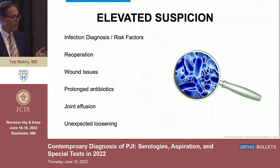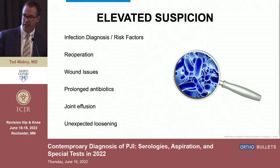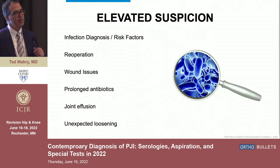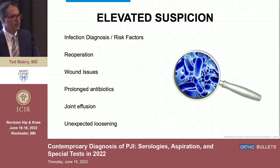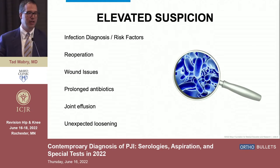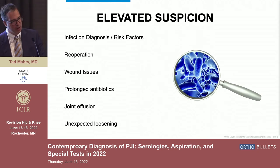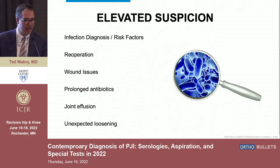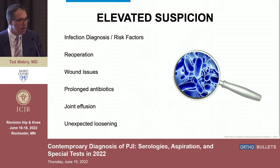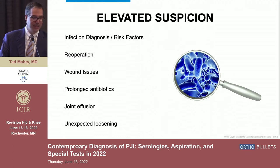Other factors that should raise your suspicion and make you look harder for infection: a prior diagnosis of infection, risk factors for infection, early reoperation, patients that have had wound issues, or a history of being given weeks of antibiotics post-discharge. Also look specifically for joint effusion or unexpected loosening — an implant that looked great on initial x-rays with a good track record that's now showing up loose should raise very high suspicion for infection.